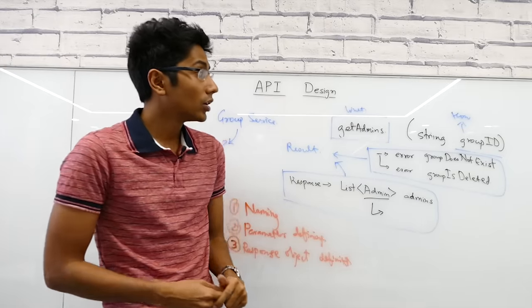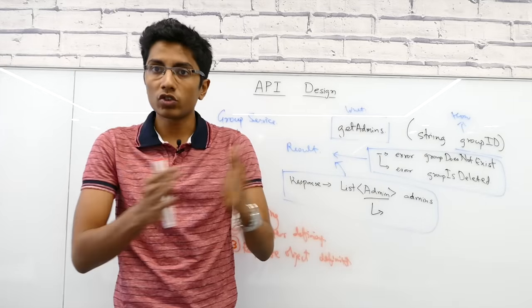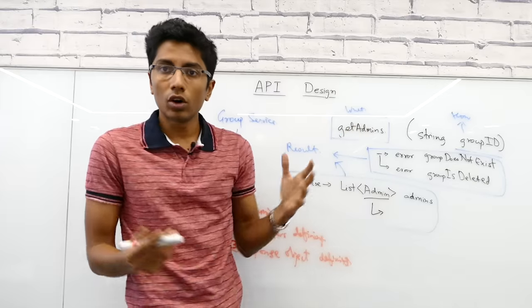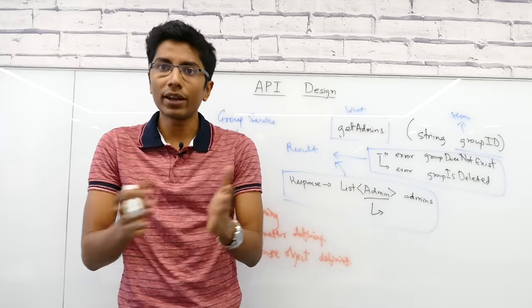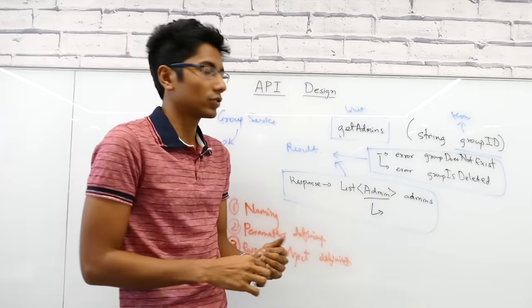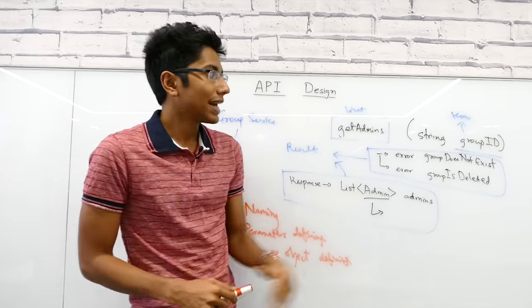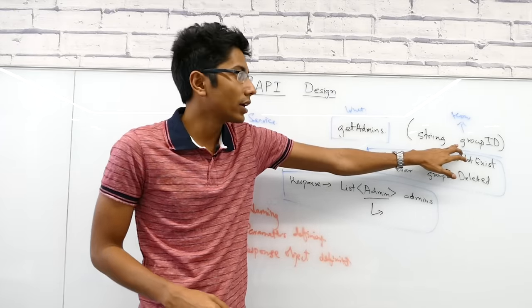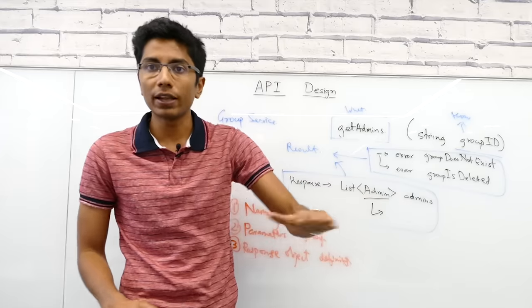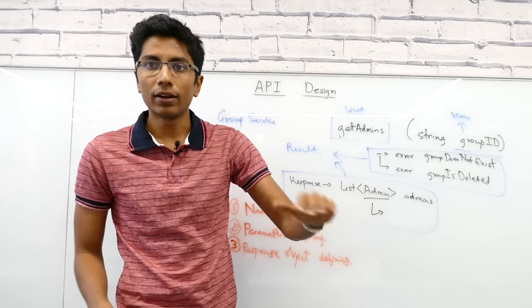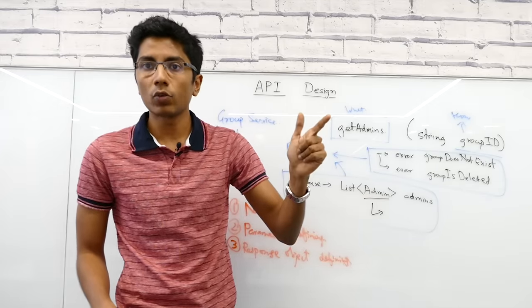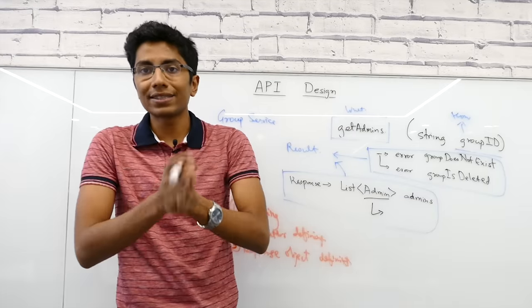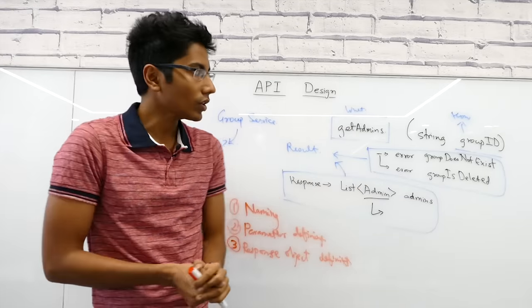Similarly, if the group ID is too long and your database query fails because of that, maybe it has a particular length of string you can put in. That's not my responsibility. I'm not going to return group ID too long, I'm just going to fail the query. The person calling the API can figure out why they sent such a long string.